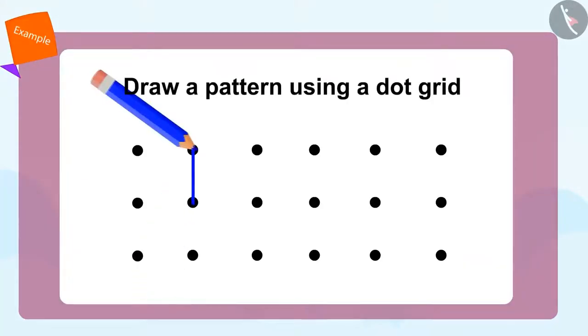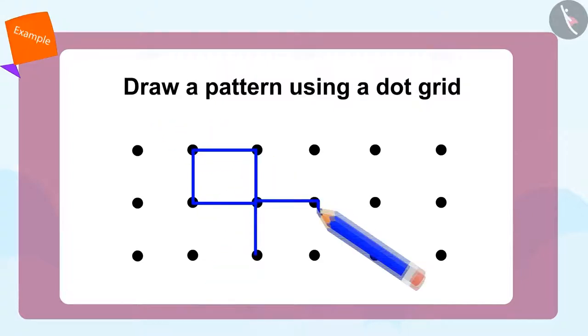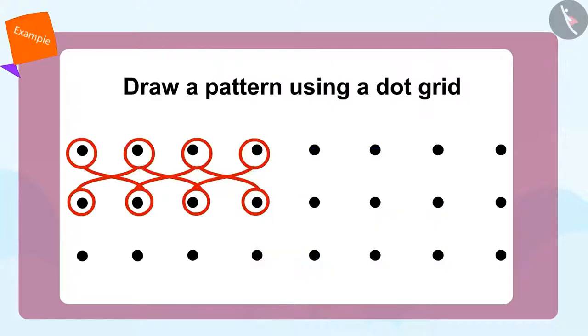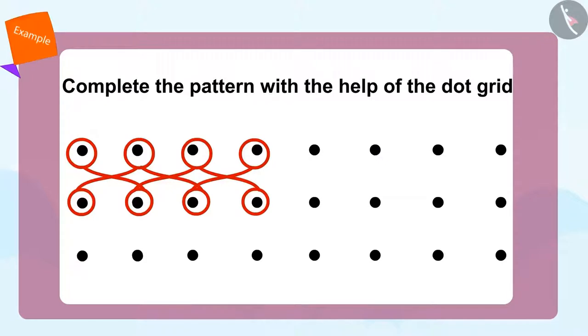First, we will create a square like this. Now we will create another square below using this corner of the first square like this. Now we can complete this pattern like this. Isn't this fun? Can you complete this beautiful pattern with the help of a dot grid?